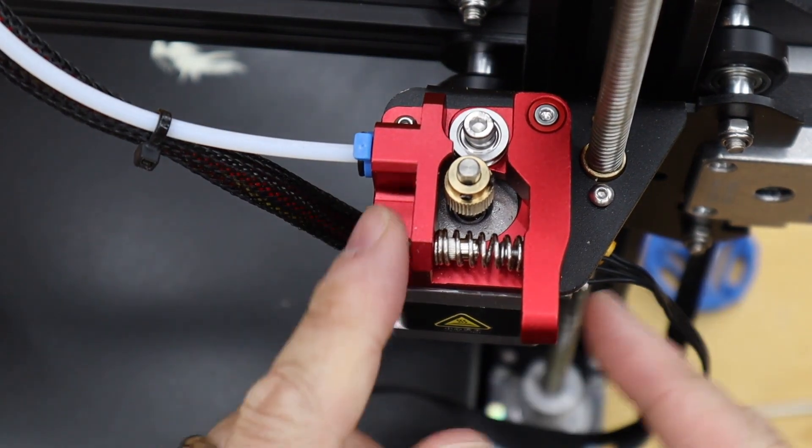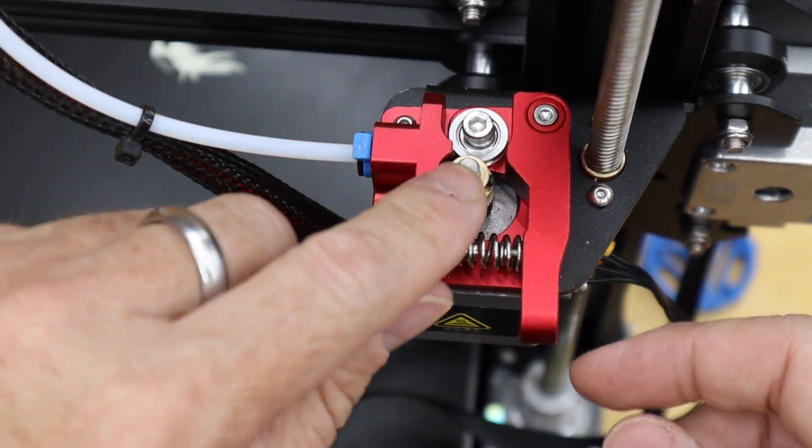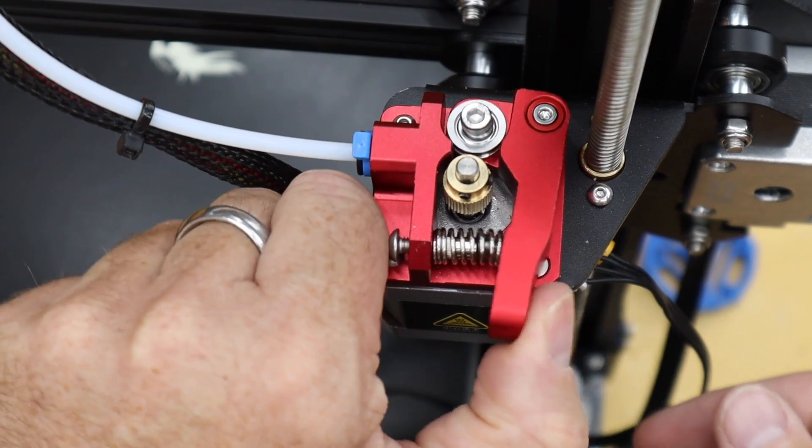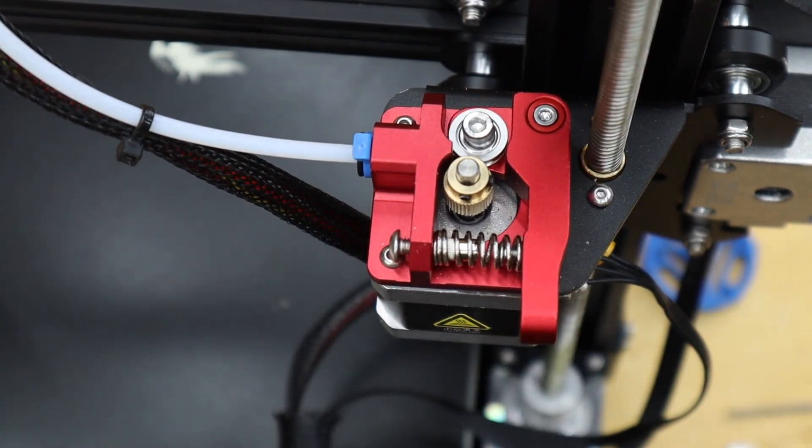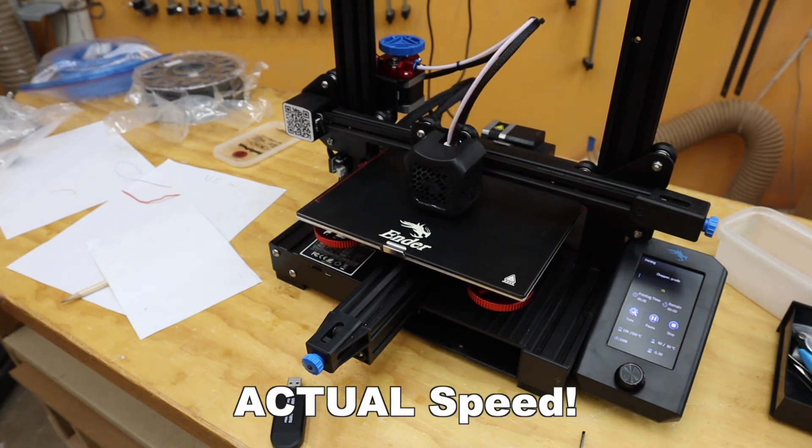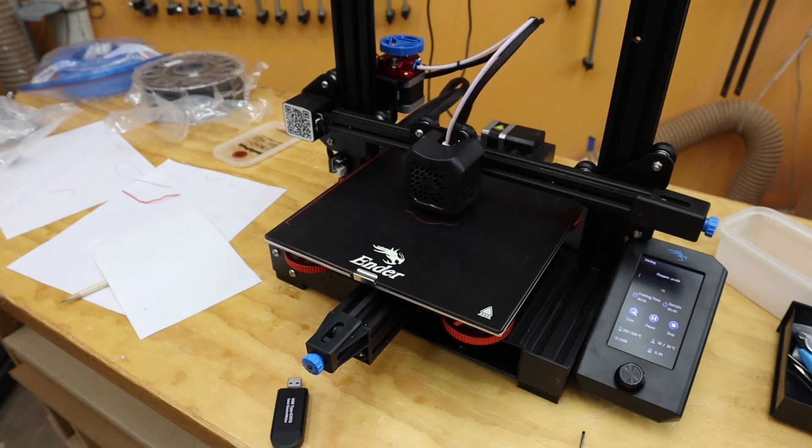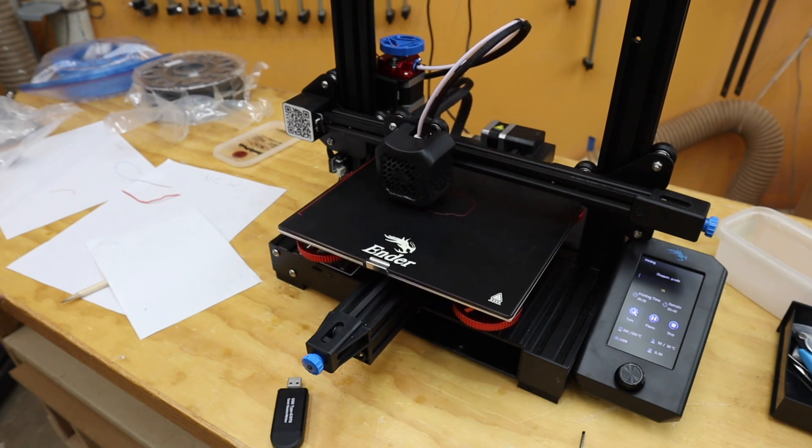And there's a top view of it all back together. Spring is in. Tube is connected. The gear is in there. Pulley is in place and the arm is doing what it should. We're off to a good start. Let's see how it does in a couple hours.